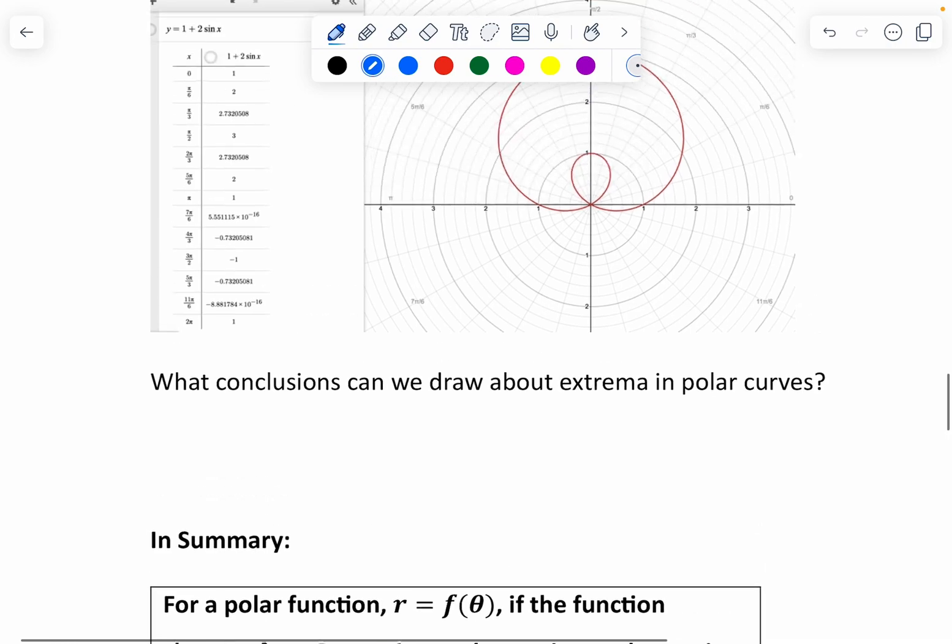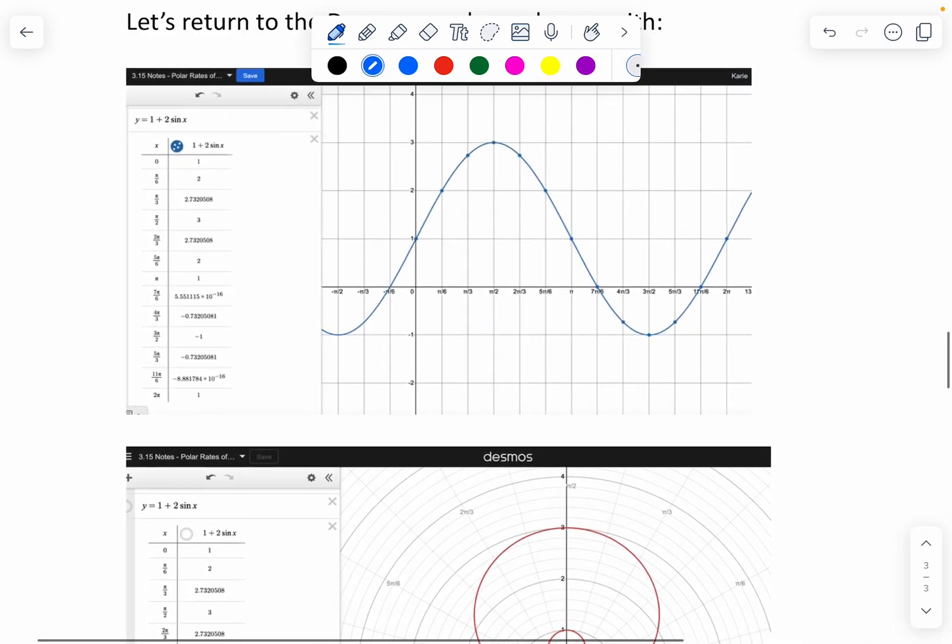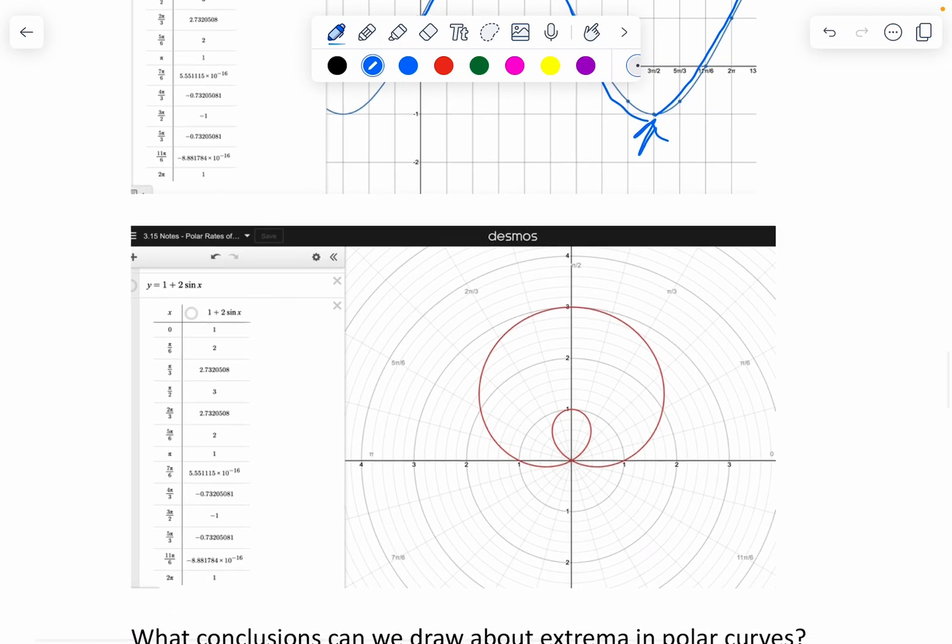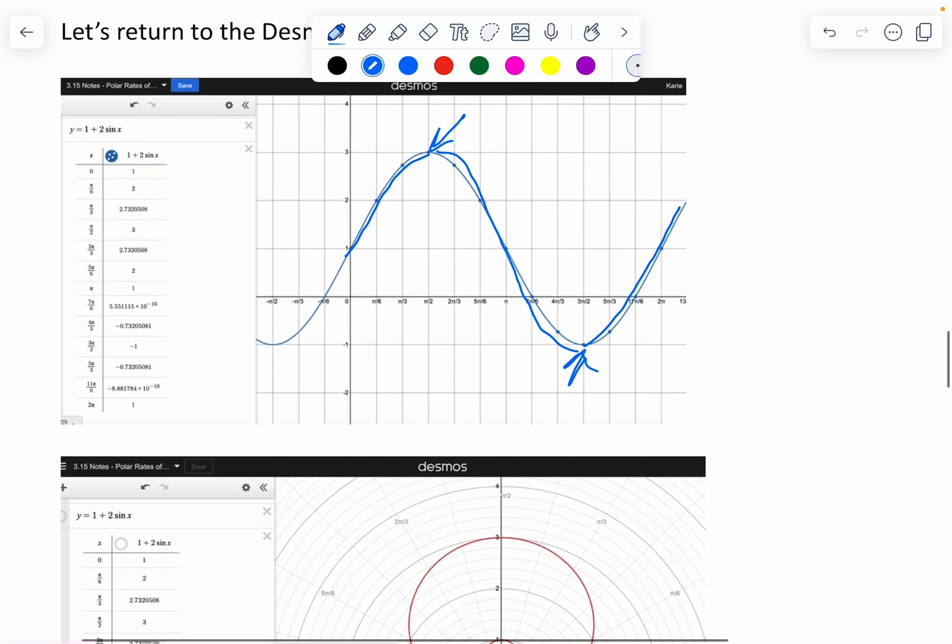Okay, so the way that I think we should interpret this is that our curve was increasing and then it starts decreasing here and then it's increasing again. And it's very easy to see in the rectangular curve. If we look over here, what's happening? So I'm saying that we've got an extrema at pi over 2 and an extrema at 3 pi over 2.